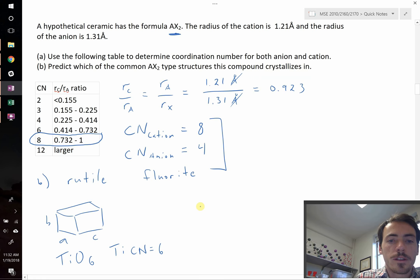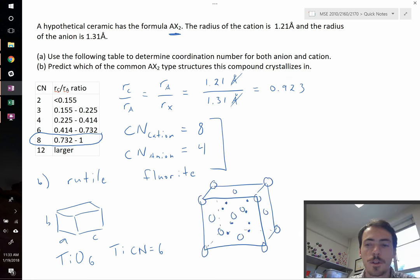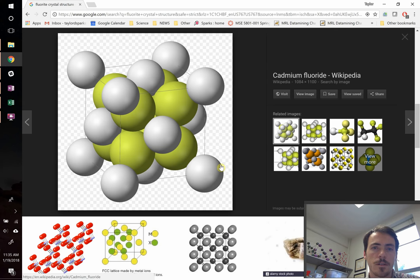But what about fluorite? Let's take a look at it. So it's cubic, so let's draw a cubic crystal structure. Let's pull up a crystal structure and see this for ourselves. Okay, here we go. Here's the crystal structure for the fluorite crystal structure.